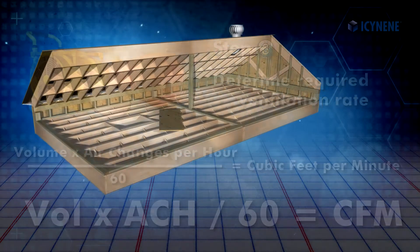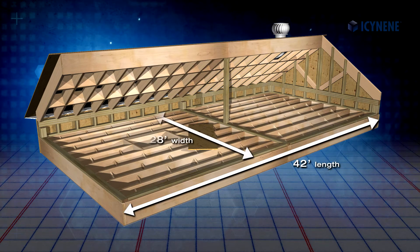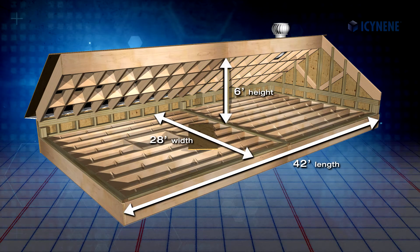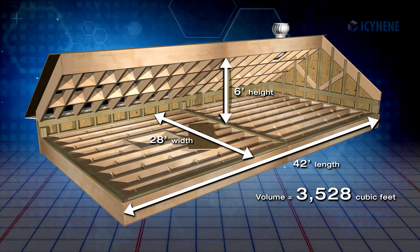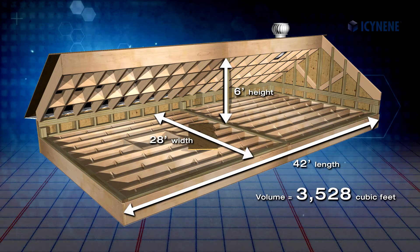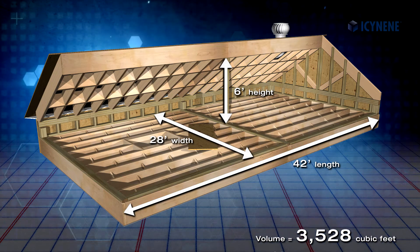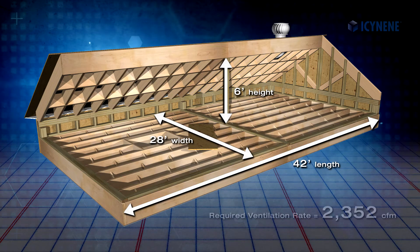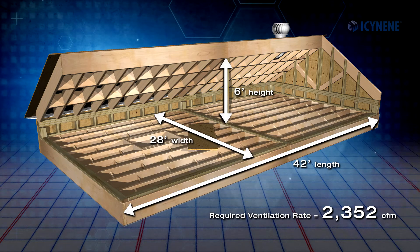For example, for an attic space measuring 42 feet long, 28 feet wide, and 6 feet high, we have a total volume of 3,528 cubic feet to be ventilated. In order to ventilate the space at a rate of 40 air changes per hour, you would require a fan capacity of at least 2,352 cubic feet per minute.